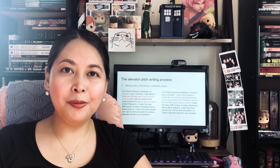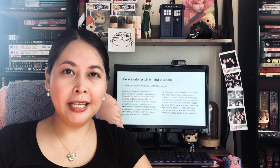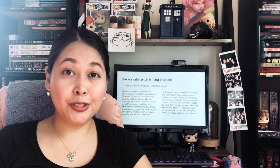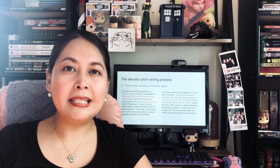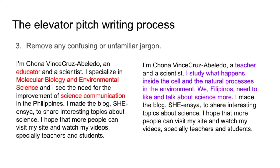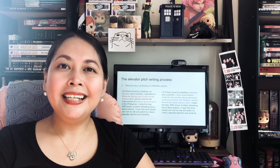Now we want to make sure that more people can understand what I'm saying. I won't always be communicating to people who understand science, but I still want to be understood. So let's look for jargon that we can simplify to layman's terms. The word 'educator' can be simplified to just say 'teacher.' On the other hand, 'molecular biology and environmental science' can still be technical for some people, so I can just say I study what happens inside the cell and the natural processes in the environment. And instead of saying 'science communication,' I just talk about what I want Filipinos to actually do, which is to like and talk about science more. Now that we have edited the script once more, let's hear what it sounds like.